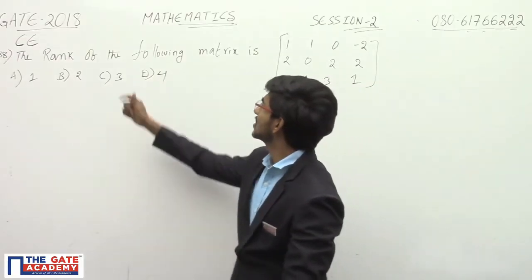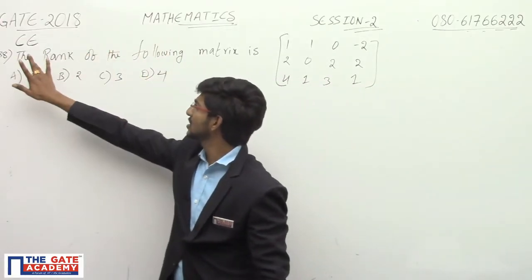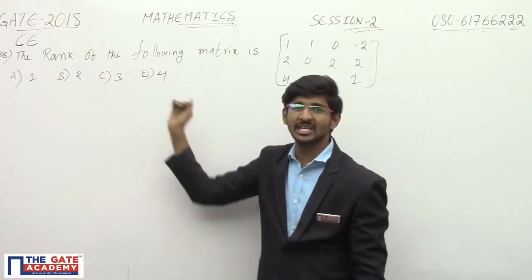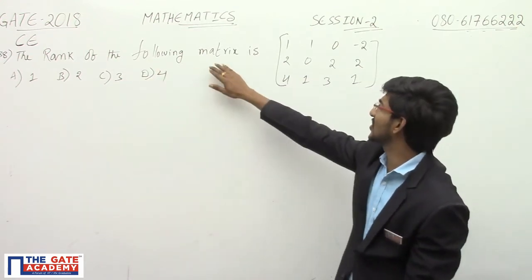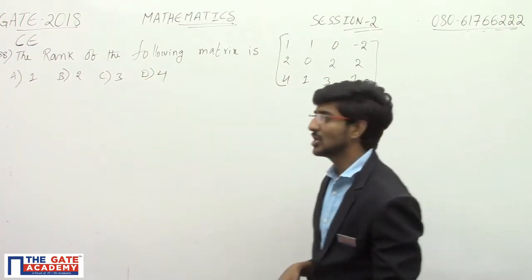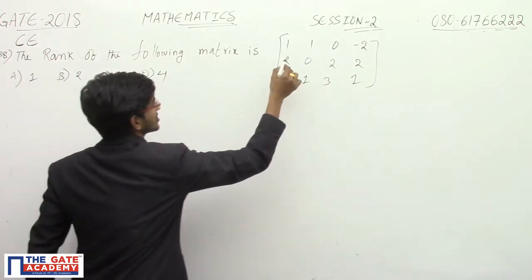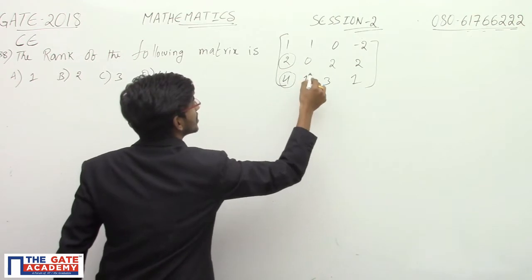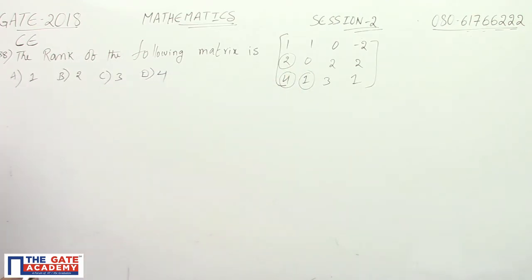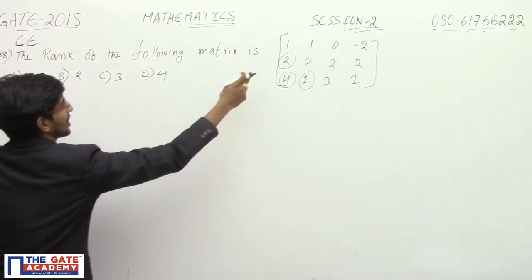GATE 2018 Mathematics, CSE branch question from linear algebra: find the rank of the following matrix. To find the rank of a matrix, just make this value zero, then directly we can find the rank.